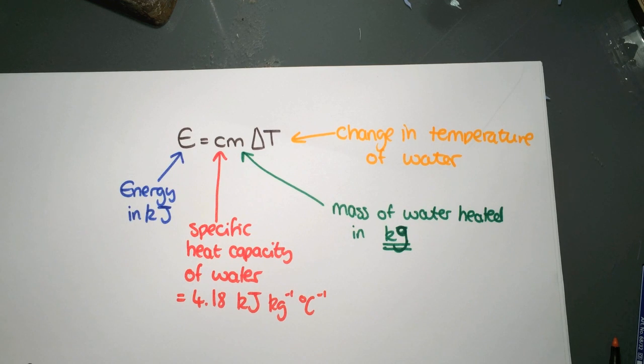And then finally, the delta T. We've got delta, which we have met before during average rate in unit 1. Delta just means change. So here we've got the change in temperature of the water.